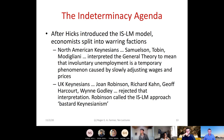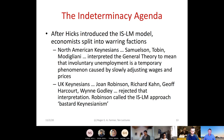After Keynes, economists split into two warring factions. The north American Keynesians — Samuelson, Tobin at Yale, Modigliani at MIT — interpreted the General Theory to mean that involuntary unemployment is a temporary phenomenon caused by slowly adjusting wages and prices, i.e., a disequilibrium in the short run. In Cambridge, England, a group including notably Joan Robinson, Richard Kahn, Geoff Harcourt, and Wynne Godley rejected that approach, leading to what became known as post-Keynesian economics. Joan Robinson famously called the IS-LM approach 'bastard Keynesianism.'